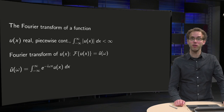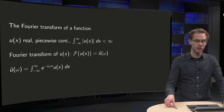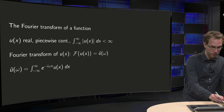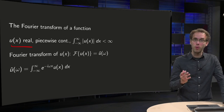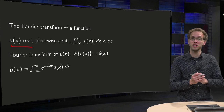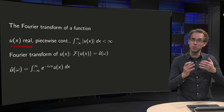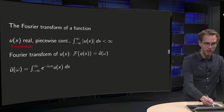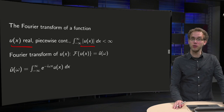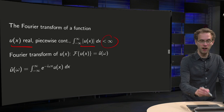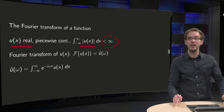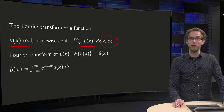And for the transform domain we will use as our variable omega. So, what do we have? We have some real function u of x. We have a condition on u of x — we need to be able to integrate. So, if we take the absolute value of u and integrate from minus infinity to infinity, this has to be finite. If this is the case, then we can compute the Fourier transform of u of x.